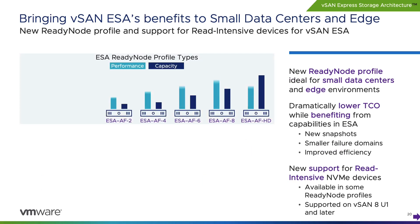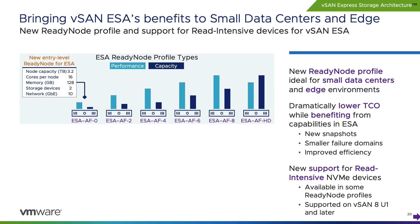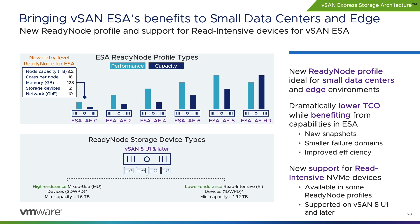We're introducing two new enhancements for systems running vSAN 8 Update 1 and later that provide more flexibility for customers interested in running ESA. First is a new AF0 ready-node profile, designed for small data centers and edge environments. With lower hardware requirements such as 10-gig networking, customers can enjoy many ESA benefits — such as improved space efficiency and new snapshotting capabilities — for environments that do not demand the highest performance. Second is support for lower-endurance, read-intensive storage devices, usable across many ready-node profiles, offering a better price point for less demanding applications. These two improvements make ESA the platform for everyone.